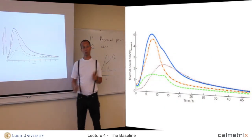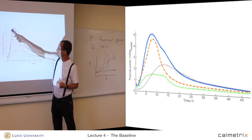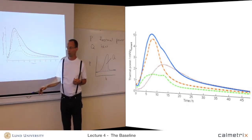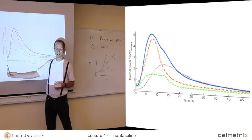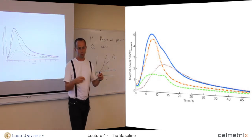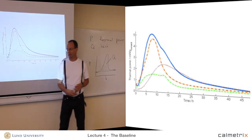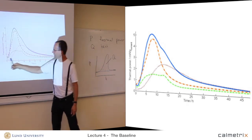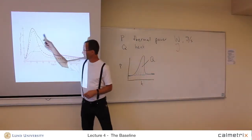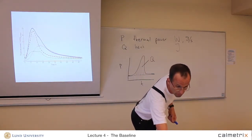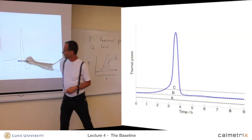It depends on what you're after. If you're only interested in, for example, at what time the maximum thermal power occurs — for the blue curve that's about 10 hours — you don't need the baselines. In that case, the important thing is to know that time zero is actually time zero of the reaction, which is when you add water to the cement. But if you want to integrate curves to get total heat, then you need to know the correct baseline.